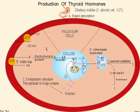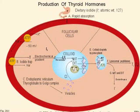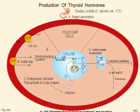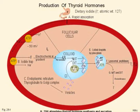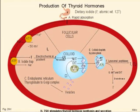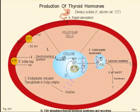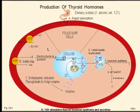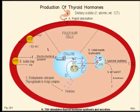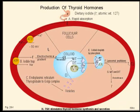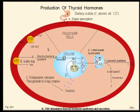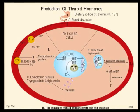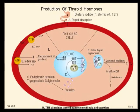Subsequently, the formation of T4 occurs as a result of coupling of two diiodothyrosine residues, and T3 by coupling a diiodothyrosine and a monoiodothyrosine. The hormones are then stored within the gland until they are released into the circulation. Finally, thyroglobulin is resorbed into the follicular cell, hydrolyzed, and the amino acids and remaining iodide reused.